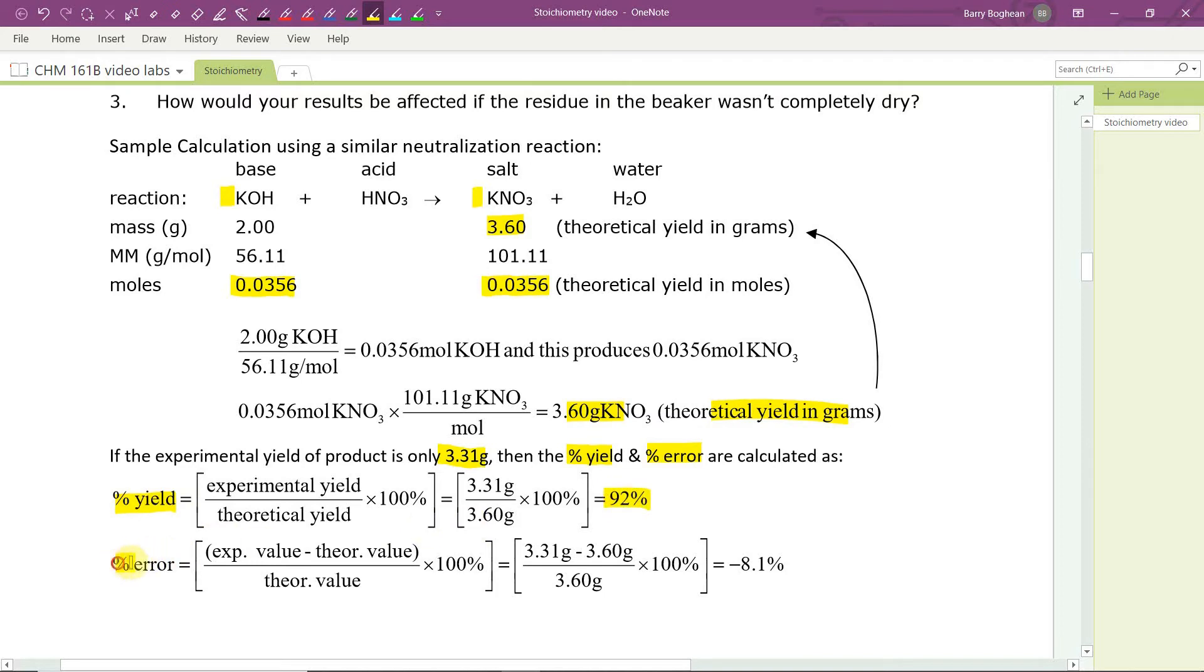The percentage error is the measured or experimental value minus the true value or theoretical value divided by theoretical value times 100. In this example, 3.31 grams was actually measured, subtract 3.60 theoretical, divided by 3.60 theoretical times 100, negative 8.1%. It's negative because you measured less than we should have found.